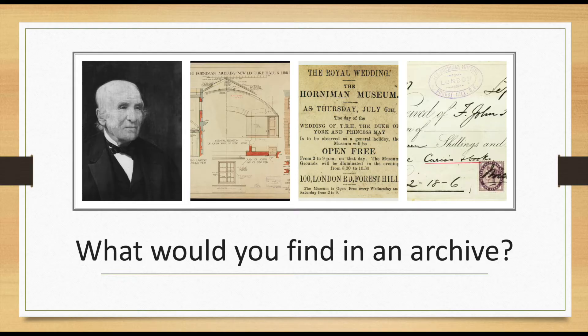An archive database functions the same as a museum collection database, but the actual items in an archive are different. In an archive, you will find records, manuscripts, blueprints of a museum building, photographs, film negatives, pamphlets — basically anything that is not an object.